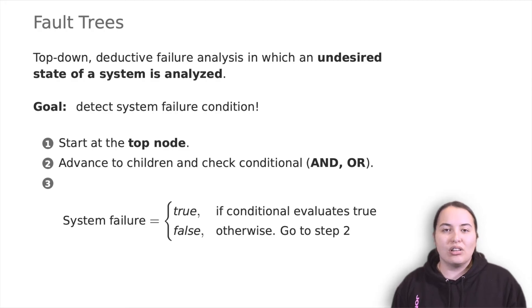This analysis method is mainly used in safety engineering and reliability engineering to understand how a system can fail, to identify the best way to reduce risk, and to determine event rates of a safety accident or a particular system-level failure.